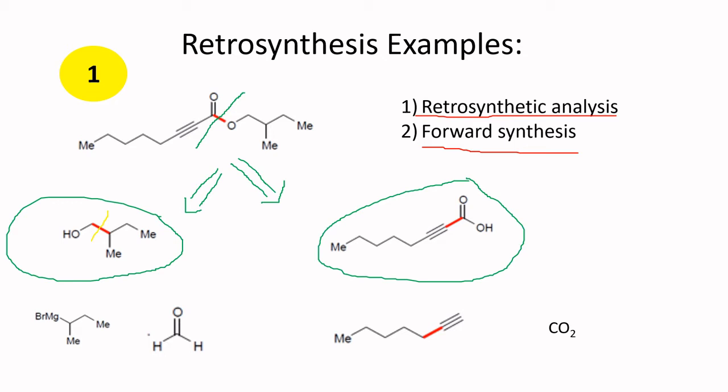In this case, because it is a primary alcohol, a primary alcohol is normally made from a Grignard reagent and some formaldehyde. So you will get these two synthetic equivalents. The double arrow here means a reverse retrosynthetic arrow.